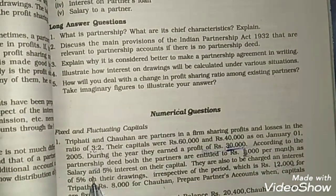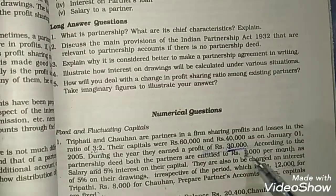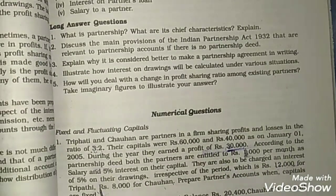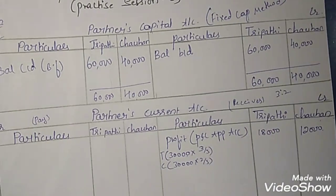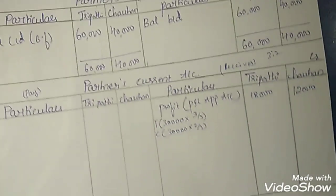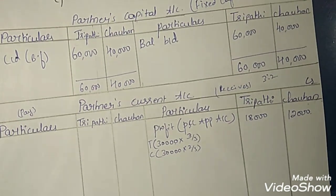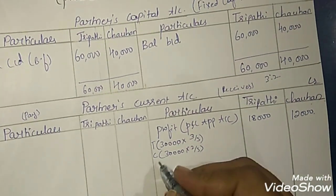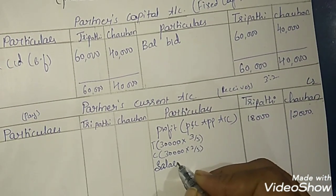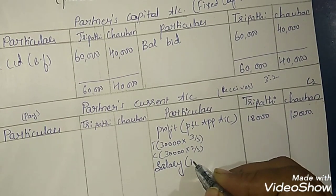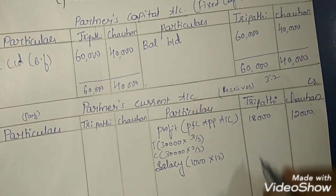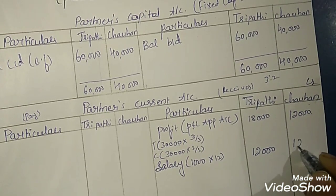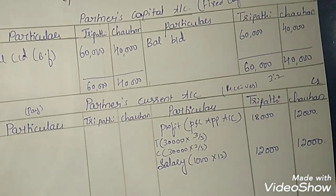According to the partnership deed, both partners are entitled to a salary of Rs. 1,000 per month and 5% interest on capital. The partners will receive salary from the firm, so it goes on the credit side. Rs. 1,000 per month for 12 months equals Rs. 12,000 for both partners.